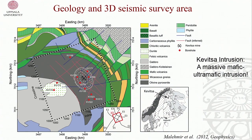Kvitsa is a disseminated nickel-copper PGE deposit — currently being mined — hosted by massive mafic and ultramafic rocks called the Kvitsa intrusion. This is the current plan for the final stage of the pit. A 3D seismic survey was justified following a number of 2D surveys that showed the crust was very reflective, suggesting potential for seismic to be used for structural mapping and targeting where mineralization sits within the intrusion.